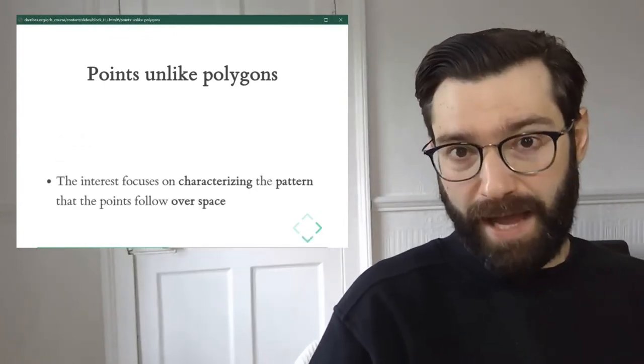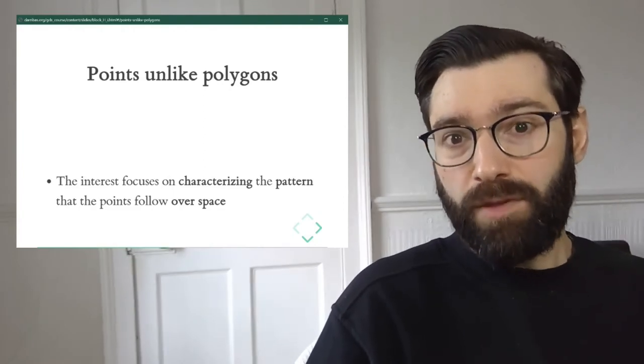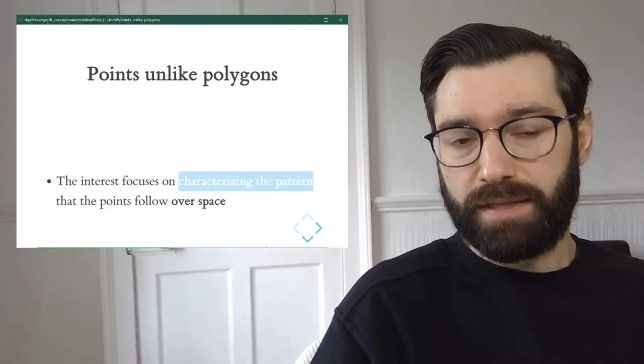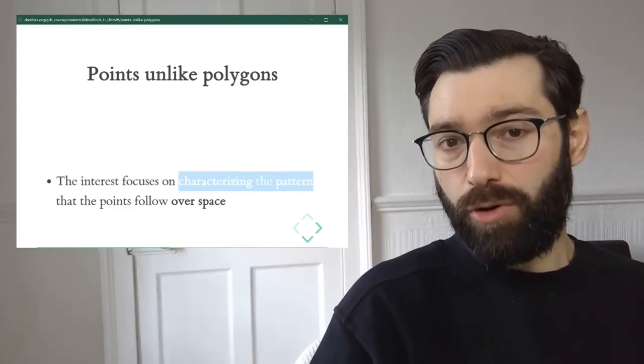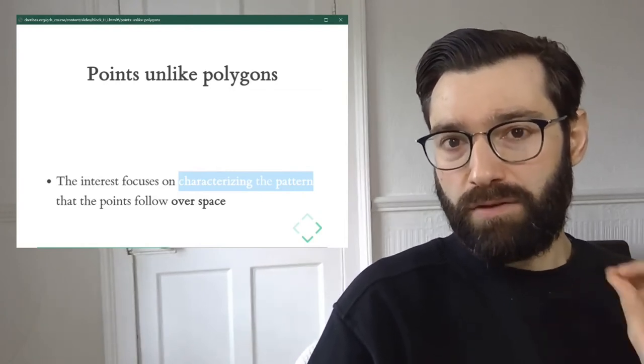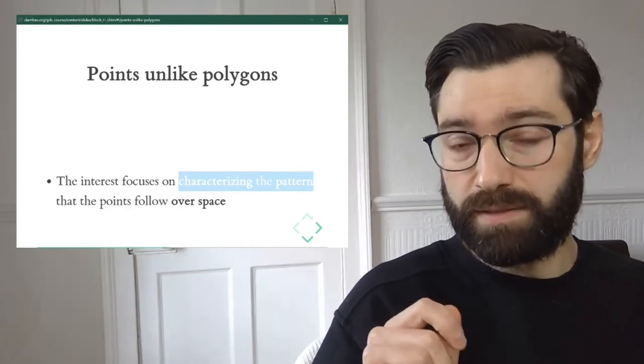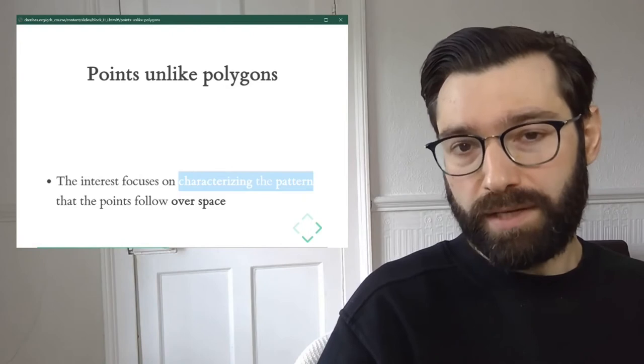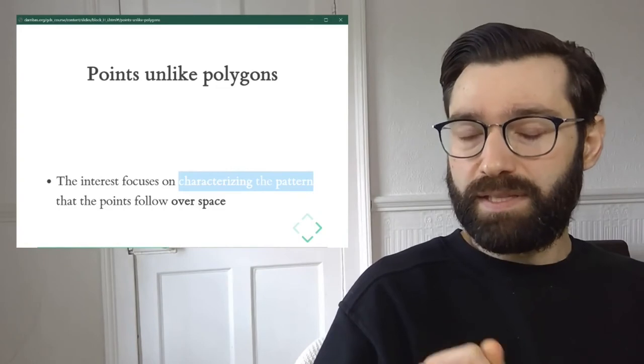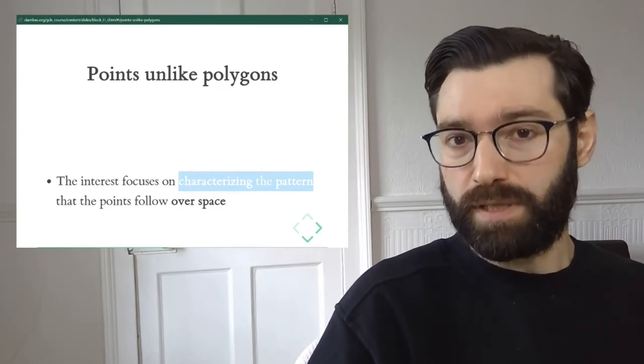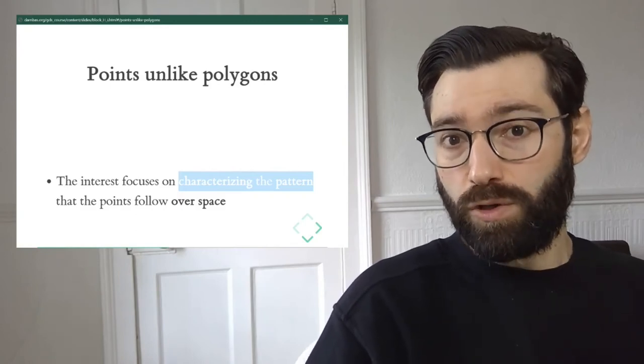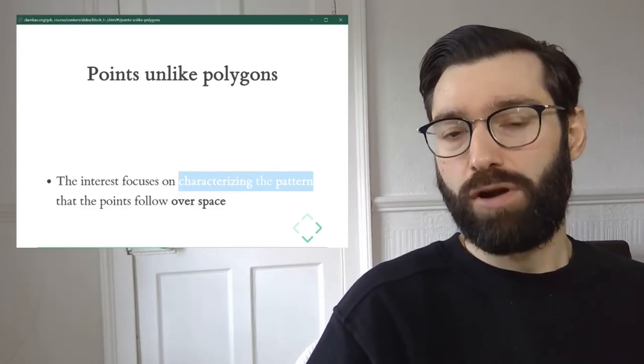And when we look at points through this lens, one of the main interests becomes characterizing this pattern. In other words, describing formally how points are distributed over space. Because when we're considering points as the location of events that could happen in many places but only happen in some, where those points are located tells us a lot about the process that we're trying to understand. And this is a subtle but very important departure from understanding points as fixed entities whose location is given and is not part of the analysis.